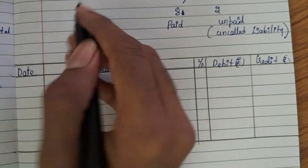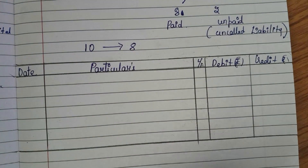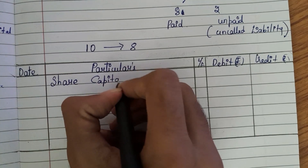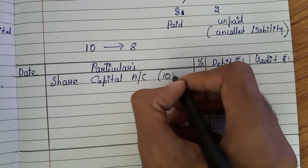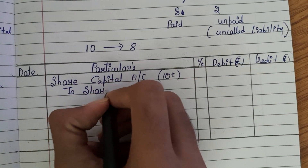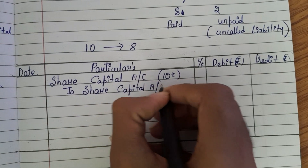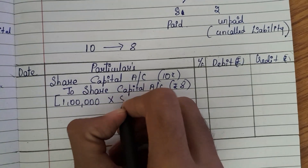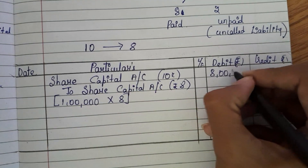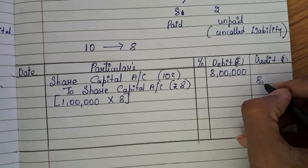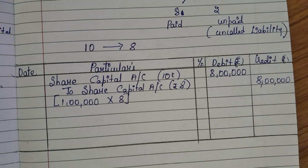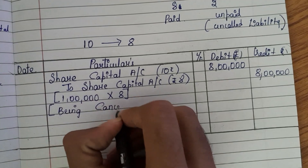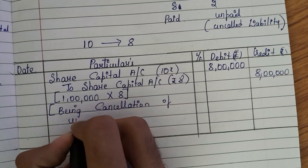So the journal entry we need to pass is: Share Capital Account (old value) — debit. The old value per share is rupees 10, and now it is being reduced to rupees 8 after cancellation. The narration is: being cancellation of uncalled liability.